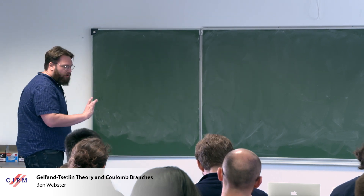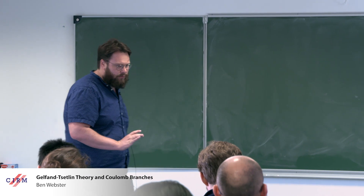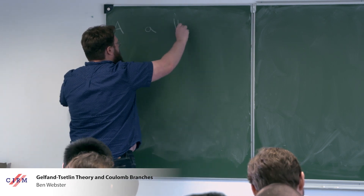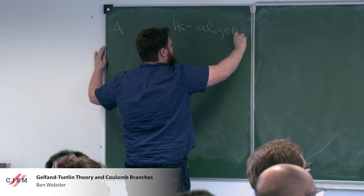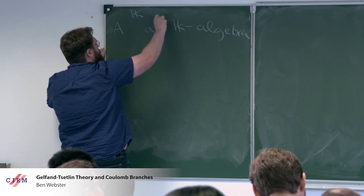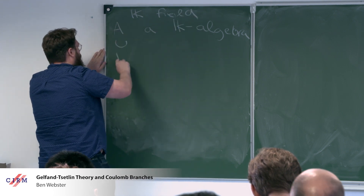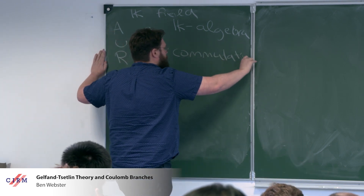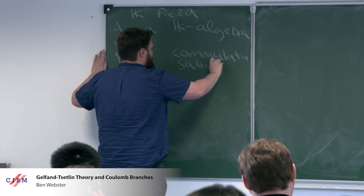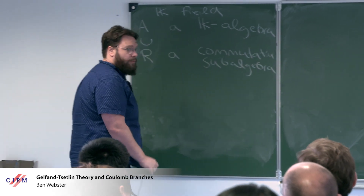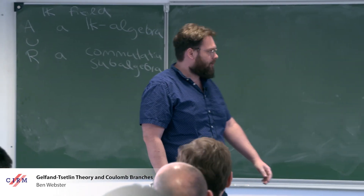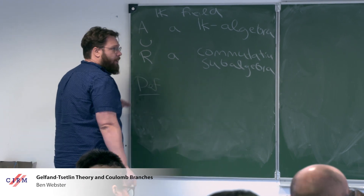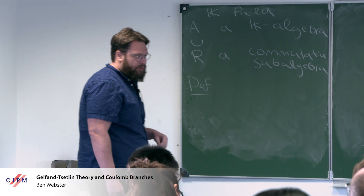Let me introduce a general algebraic setup, which I think is good to think about Coulomb branches in terms of. Let A be a K-algebra — here K is a field — and let R inside it be a commutative subalgebra. We can also have a discussion about what non-commutative algebras you could put here instead, but commutative is a good start. So whenever you have a setup like this, there's a natural category of modules you can study, which is quite interesting.